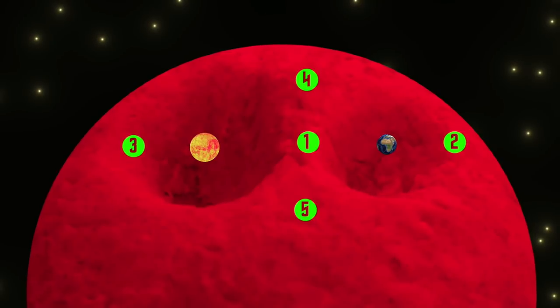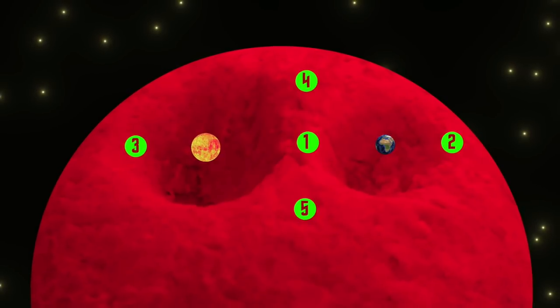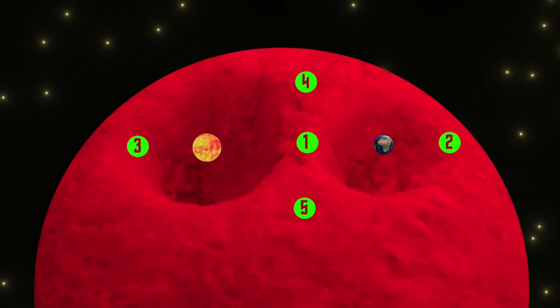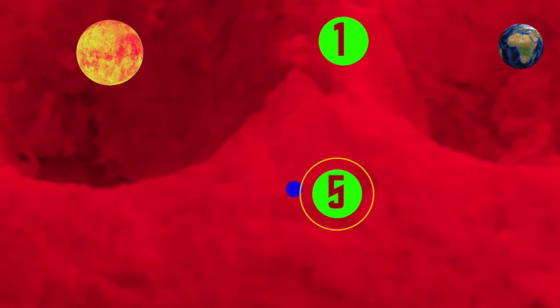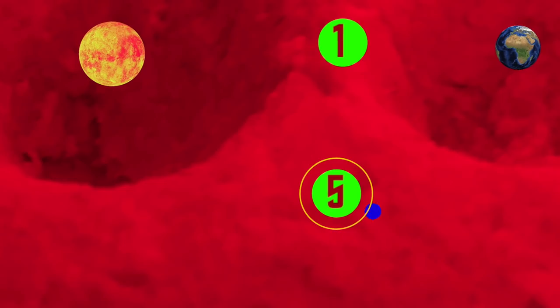L4 and L5 are a completely different story. For these two points, any deviation activates something known as the Coriolis force because of which the object spirals back into place. L4 and L5 are so stable that they collect space junk naturally.